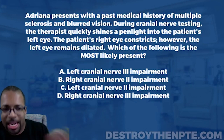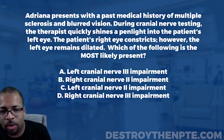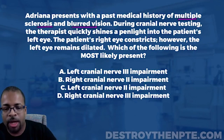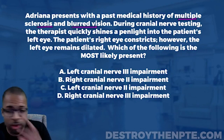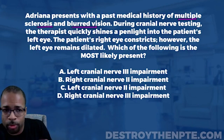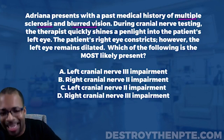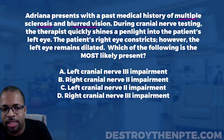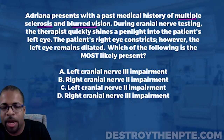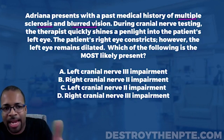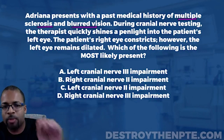Adriana presents with a past medical history of multiple sclerosis and blurred vision. For the NPTE, you need to have a good understanding of what multiple sclerosis is. Write this down: multiple sclerosis is one of those conditions that has a lot of impact on the patient's extraocular muscles and cranial nerves dealing with the eyes. So it's not surprising that Adriana has blurred vision.